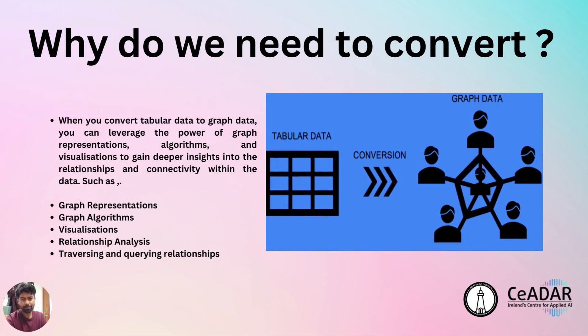Graph data can be used to model and analyze various types of networks including social networks, biological networks, transportation networks, computer networks, and more. It provides a powerful way to understand and analyze relationships and dependencies within a system. When we convert tabular data to graph data, we can leverage the power of graph representations, algorithms, and visualizations to gain deeper insights into the relationships, offering a more comprehensive and intuitive way to analyze connectivity within the data.